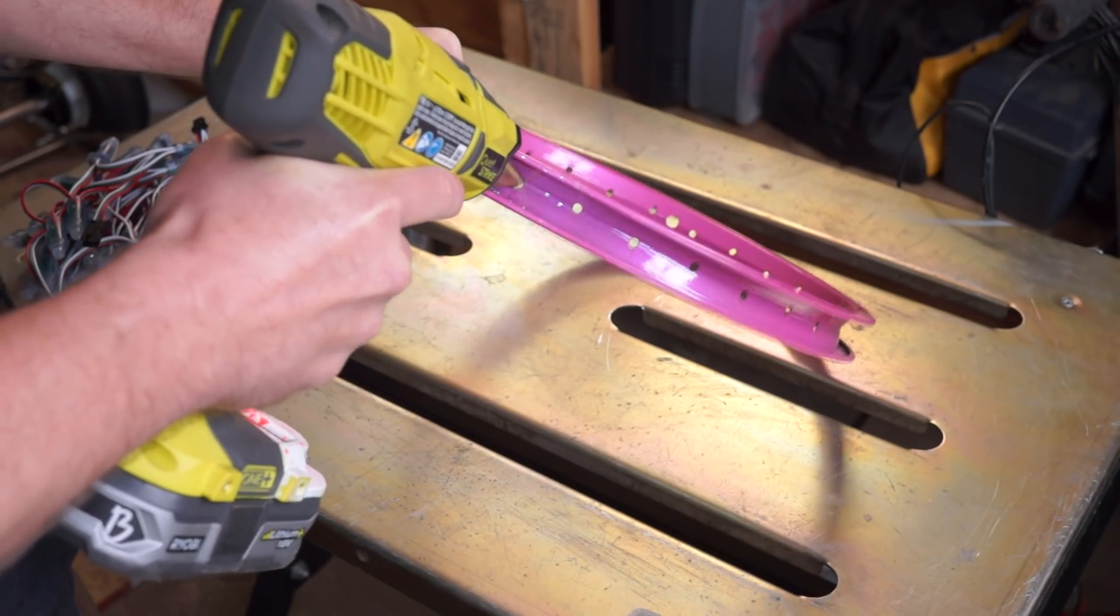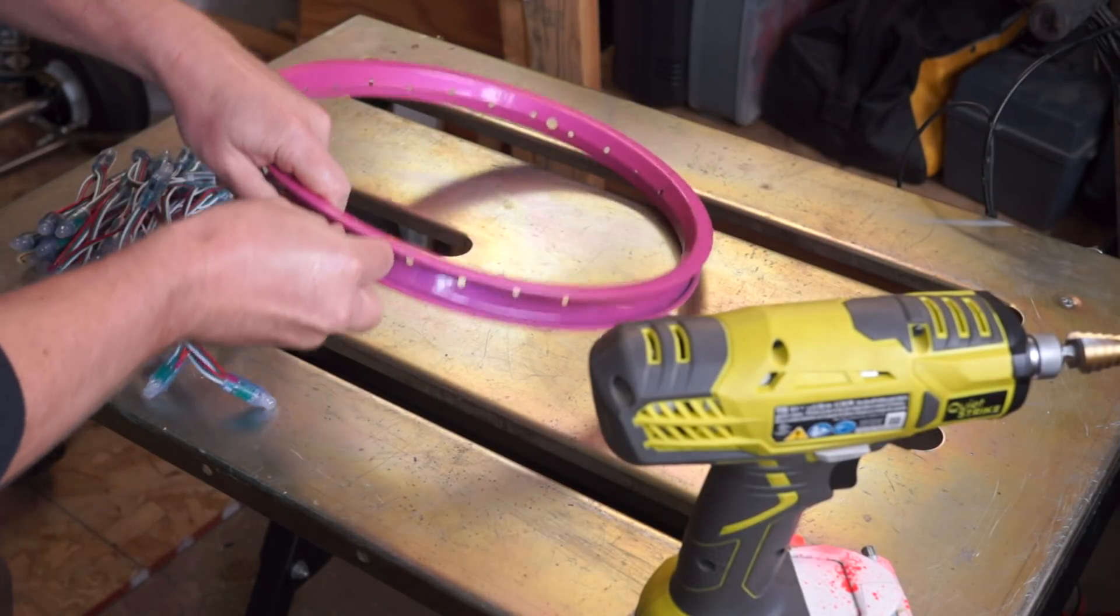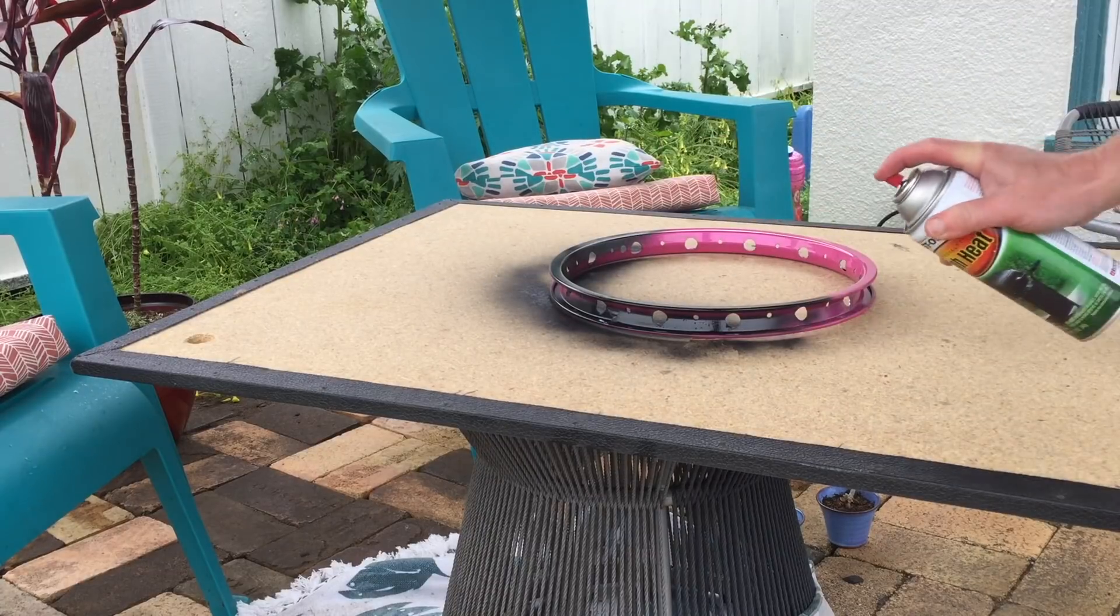Then you'll need to drill out the holes a little bigger in order to fit the lights. I used a step bit on every other hole. If you want to paint the rim another color, this is the time to do that.